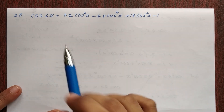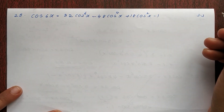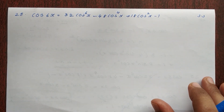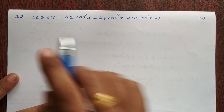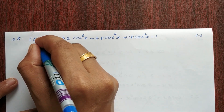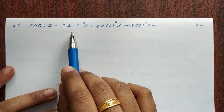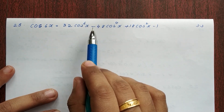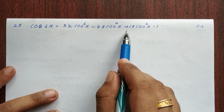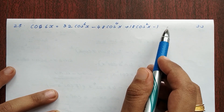Hi everyone, my exercise is 3.3. I have a problem with this. Cos6x is equal to 32 cos raised to 6x minus 48 cos raised to 4x plus 18 cos square x minus 1.